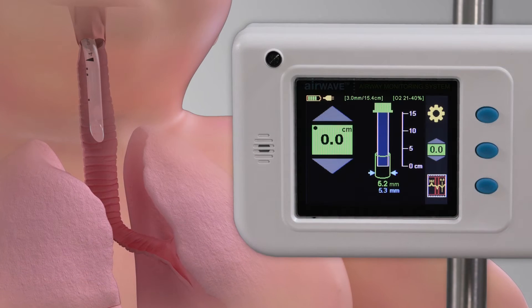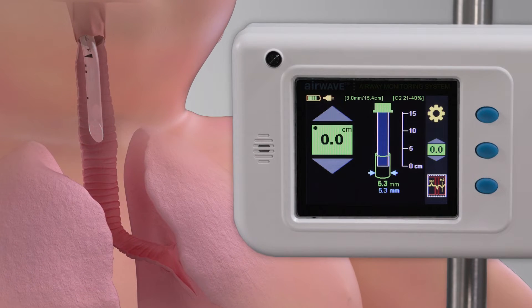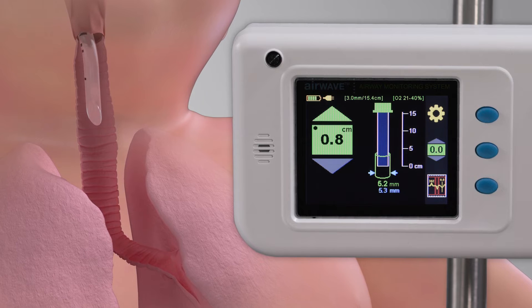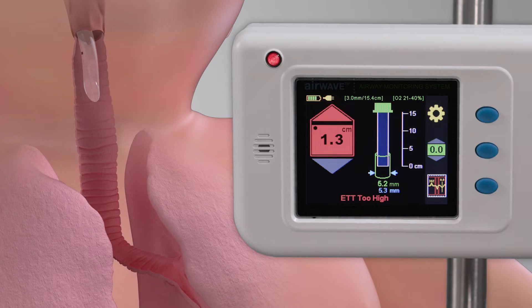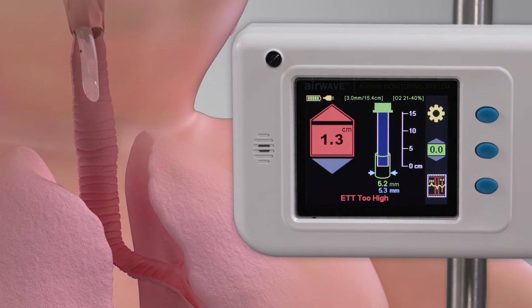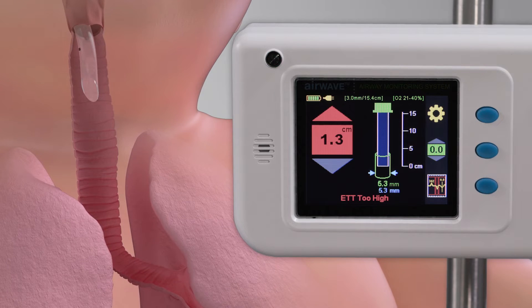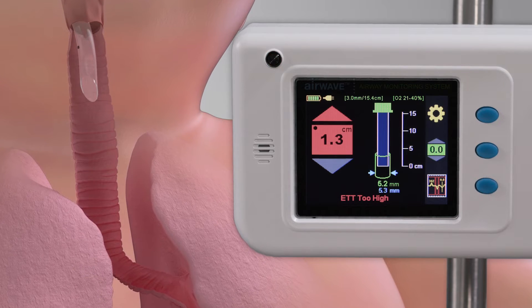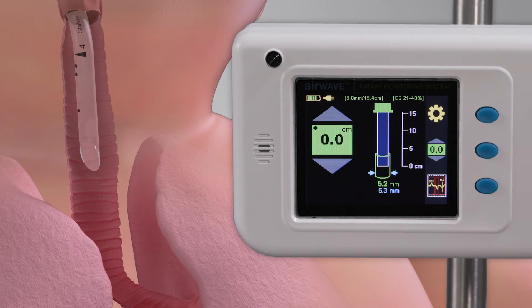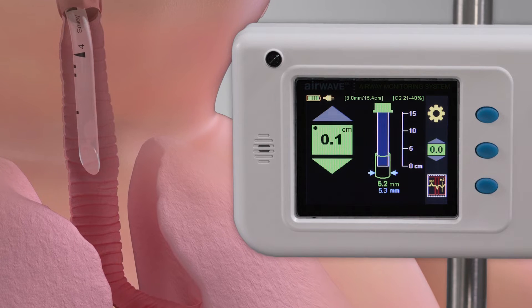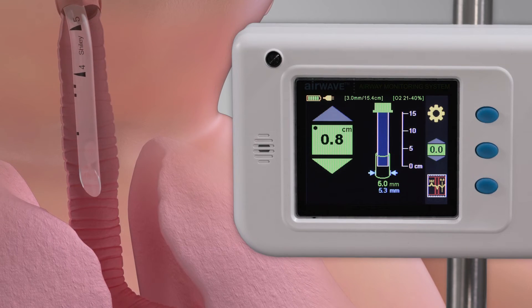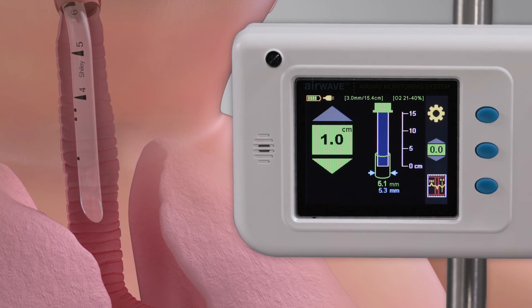The first continuous measure is movement and direction of the ETT tip. You will see upward movement from the set baseline location and an indication if the tube is too high. You will also see downward movement from the set baseline location with an indication if the tube is too low.